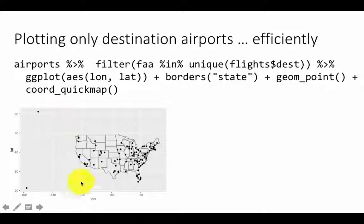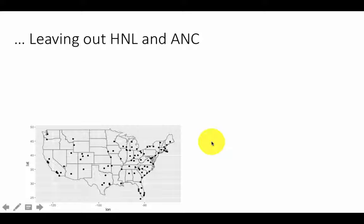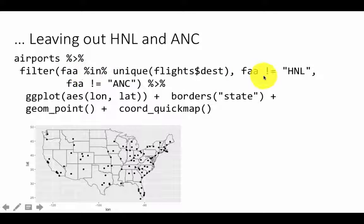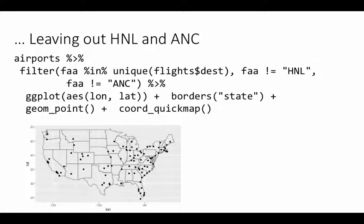Now we will modify it to get only the mainland airports — in other words, filter out Honolulu and Anchorage. I am adding additional filter conditions: get me only those which are in the destinations, and the airport code is not HNL (which is Honolulu), and the airport code is not ANC (which is Anchorage). So now we have only those airports which are in the destinations in the flights table and only those which are in the mainland.